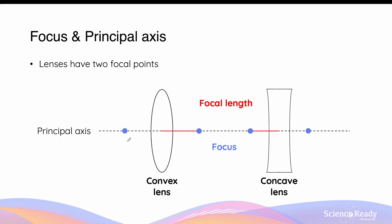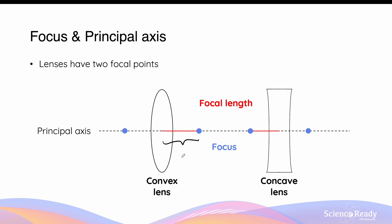Like mirrors, lenses also have a principal axis, which is a straight line that's drawn through the middle of the lens. Each lens has two foci or two focuses, one in front and the other behind the lens. Typically, for convex lenses, we use the focus behind the lens as reference. And for concave lenses, we use the focus in front of the lens as reference. The focal length is the distance drawn from the focus to the center of the lens, and that is the case in both convex and concave lenses.